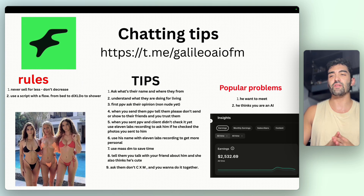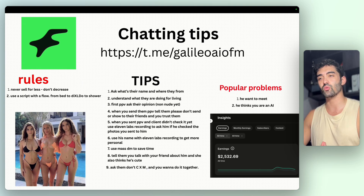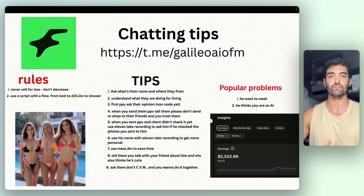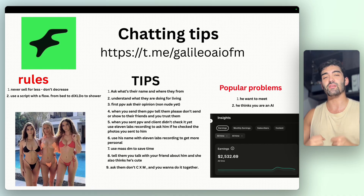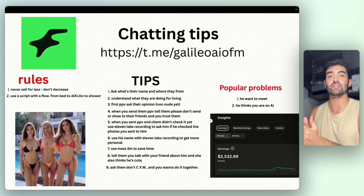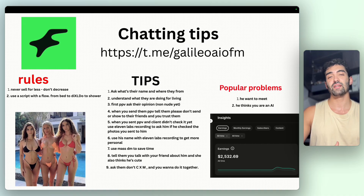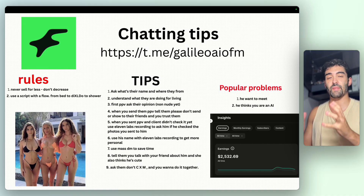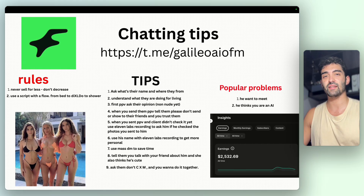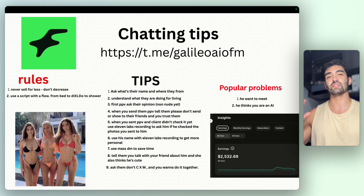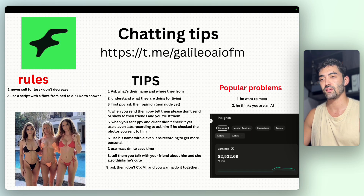Fourth tip: when you send a PPV, tell them 'please don't show this to your friends, keep it in your private folder.' When you say that, the guy feels like you care only about him and everything is special and exclusive for him. This builds connection really fast and creates a sense of trust.